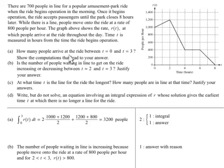So how many people arrived at the ride between time zero and time three? Show your computation that leads to your answer. Well, if I want the number of people who have arrived, which function? Does 800 have anything to do with who comes? No, this is how quickly the line gets shrunken.